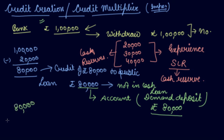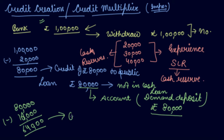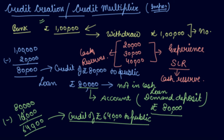Now again 80,000 is deposited. On the experience of the bank they say 20% is their Statutory Liquidity Ratio — the cash ratio they have to maintain. So the bank will keep 16,000 as cash. The bank is then left with 64,000, and again the bank can create credit of rupees 64,000 to the public. Again the 64,000 will not be given as cash — it will be deposited as a demand deposit in the account.